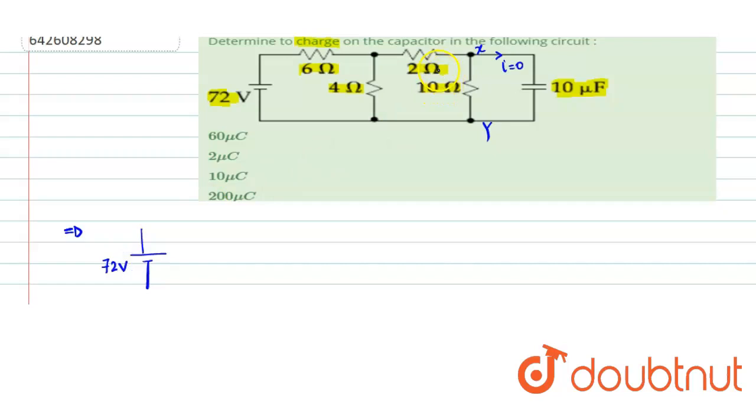This is 72 volts, 6 ohm, 4 ohm. Now we can see 2 ohm and 10 ohm are in series, as the current going into the capacitor is zero. So if these are in series, the equivalent will be 12 ohm. And then 4 ohm is connected in parallel with it, and then we have 6 ohm connected with a battery of 72 volts.